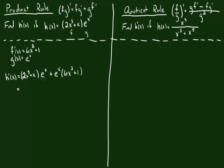We can clean this up a little bit. There are two terms here, and there's an e to the x in both of them, so let's factor that e to the x out. When we do so, we're left with 2x cubed plus x from the first term, and 6x squared plus 1 from the second term. Most mathematicians would write 2x cubed plus 6x squared plus x plus 1, but leaving it factored is perfectly fine. Problem's done.